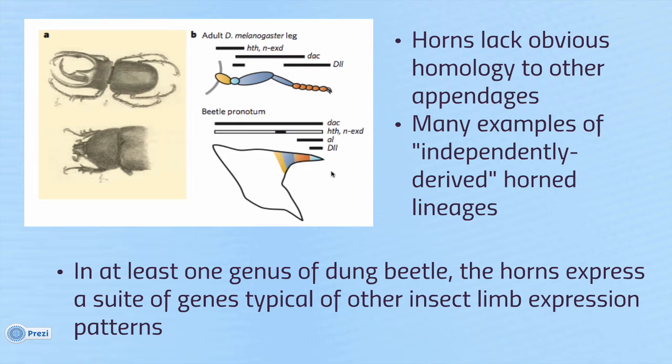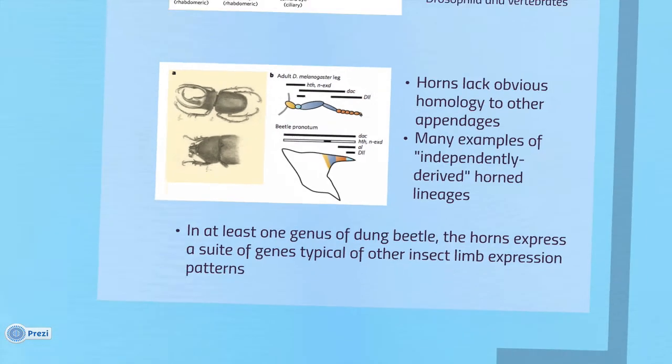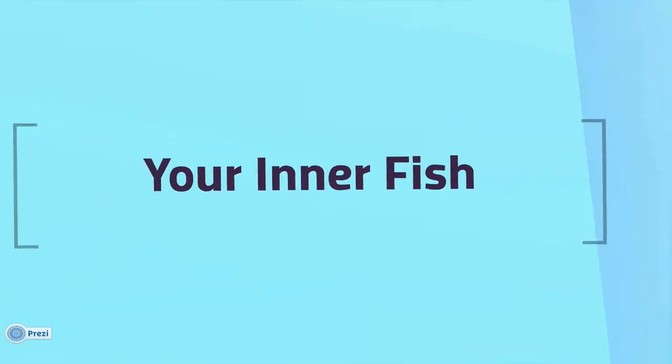You see very similar suites of genes being turned on in similar locations — that's another example of a deeply homologous trait. A third example in the paper has to do with fish and tetrapod limbs, which we've talked about several times, so I won't revisit it here. That is the concept of deep homology.